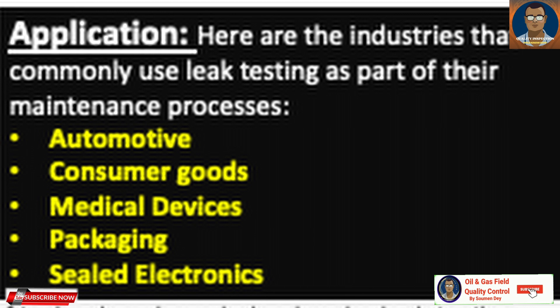These advances have in turn helped companies improve the quality of their manufacturing processes and their overall output. One of the biggest advances in leak testing has been the advent of the Internet of Things. Now with an internet connection, inspectors can collect, monitor, and share leak testing data remotely, allowing them to get information they need in a timely manner. The data can be evaluated not just by the inspectors but also by manufacturing engineers, production managers, maintenance managers, and other stakeholders, allowing for improved real-time insights into the conditions of the assets they are using.